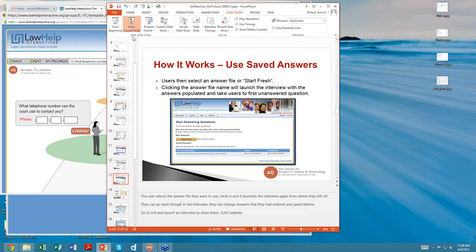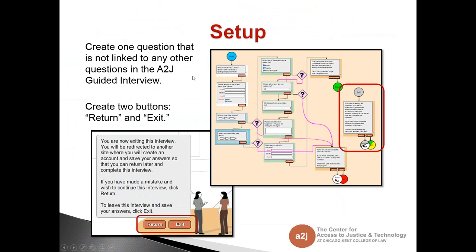Going back into our presentation — how to set it up. In A to J Author, you need to create one question that is not linked to any of the others in the guided interview. It is a stand-alone question with two buttons: return and exit. Remember, this is not automatically enabled for every guided interview. It's your choice as the author whether to allow end users to exit and come back later. If it's a short interview, you might not want to give them that option.